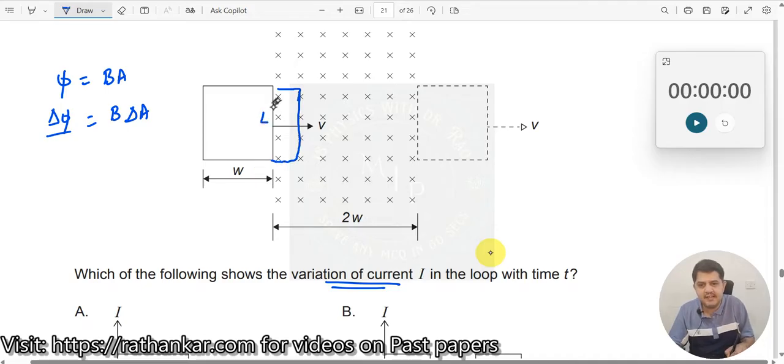How does changing delta A come in? If this is the length, the new position after a time T, it is moved by a distance delta x. What is the change in area? Change in area is nothing but this area. This was your initial area A1, this is your final area A2. The change in the area which has been intercepted is nothing but this delta x multiplied by this length, this area of the rectangle.